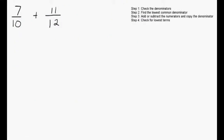Let's take a look at another example. In this example, we have 7 tenths plus 11 twelfths. And as always, we have our method located up here. So, step 1 is checking to see whether the denominators are equal. Again, we see that 10 on one side and 12 on the other, so they are not equal. So we're going to move on to step 2.